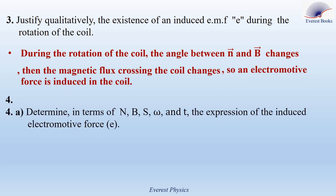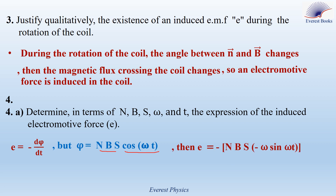Part four A: determine in terms of N, B, S, omega, and t the expression of the induced electromotive force. Using Faraday's law, E is equal to minus d-phi by dt. Since phi equals NBS cosine omega t, and NBS is constant while cosine omega t is variable, the derivative of the flux with respect to time equals NBS times the derivative of cosine omega t, which is minus omega sine omega t. Therefore, E is equal to NBS omega sine omega t.